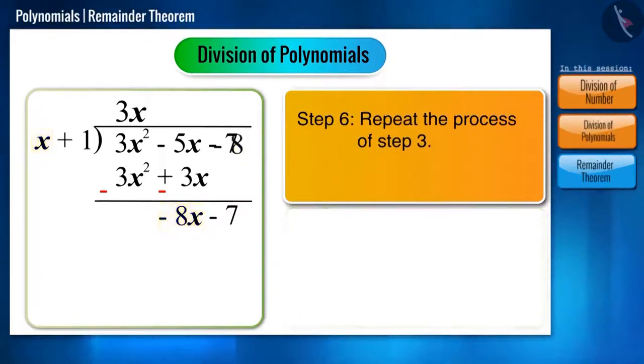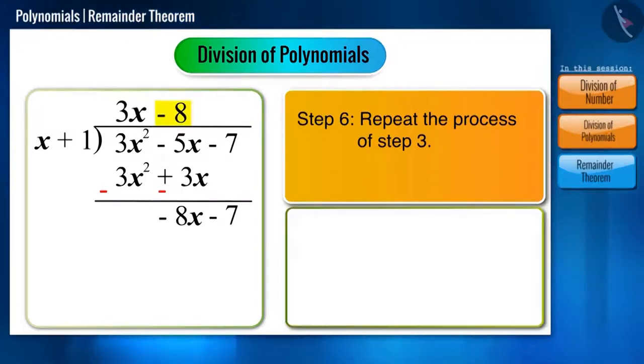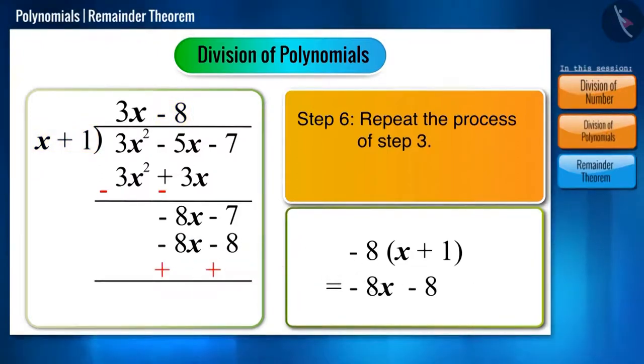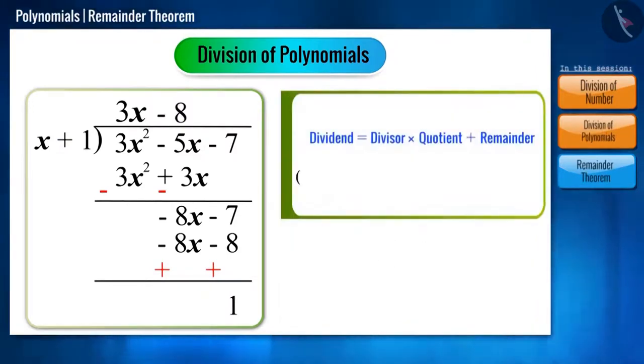Let's write minus 8 in the quotient place and if we multiply it with all the terms of the divisor, we get minus 8x minus 8. When we subtract it, we are left with remainder 1. We can represent this division in the form of 3x squared minus 5x minus 7 is equal to x plus 1, 3x minus 8 plus 1.